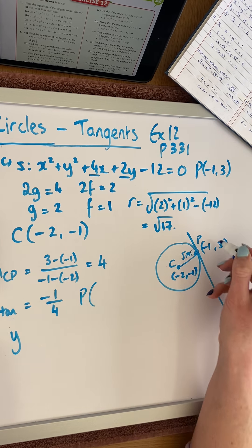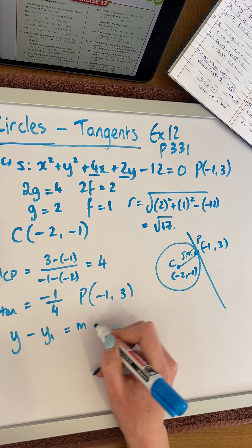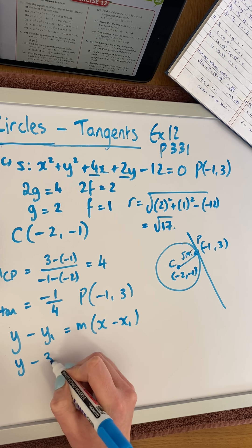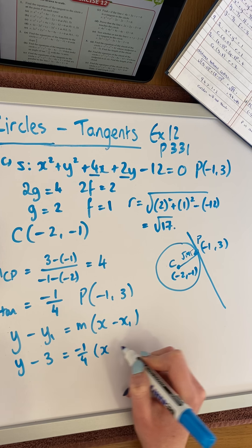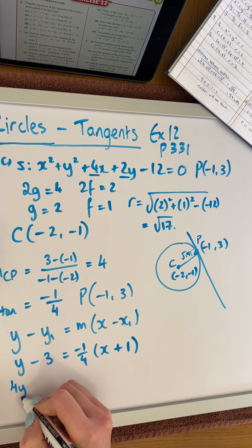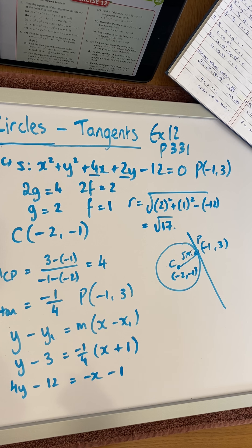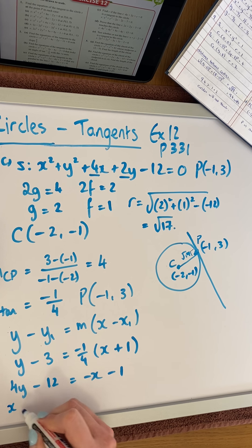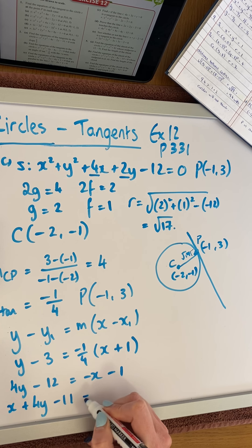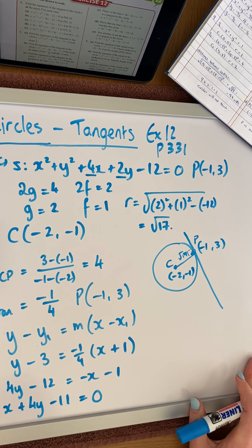Substituting the slope 1/4 and the point of contact (−1, 3) into the equation y − y₁ = m(x − x₁), we get y − 3 = −¼(x + 1). Multiplying across by 4 to eliminate the fraction: 4y − 12 = −x − 1. Bringing everything to one side in the form ax + by + c = 0, the equation of our tangent is x + 4y − 11 = 0.